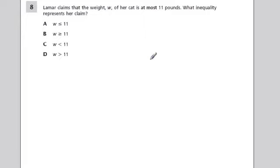Next we have Lamar claims that the weight w of her cat is at most 11 pounds, so it could be 11, it could be 10, 9, and so forth. What inequality represents her claim? Any weight that is 11 or less, so we could write the weight is less than or equal to 11, which is right here, it's choice A.